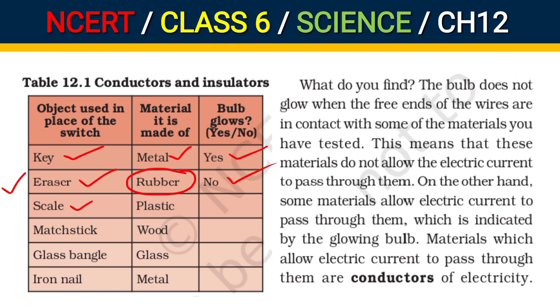Next is a scale — this is made of plastic, so the bulb does not glow. Similarly, wood does not allow current to pass so the bulb does not glow there either. Glass is also an insulator so the bulb does not glow for glass.